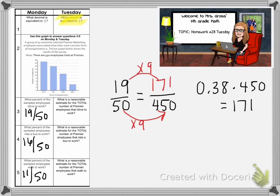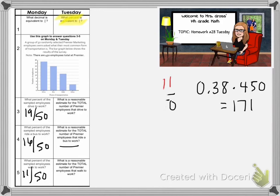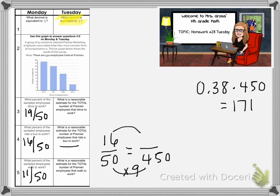Number four asks for a reasonable estimate of the total number of Premier employees that ride a bus to work. We had 16 out of 50 yesterday, so we want to figure out how many out of 450. You could times it by 9, so 16 times 9, or use the 32% we found yesterday and multiply 32% times 450. Both methods give you 144.